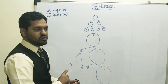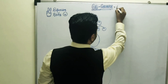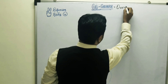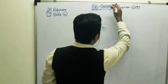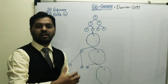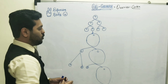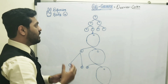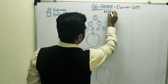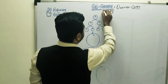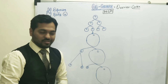Just as spermatogenesis was occurring in male gonads, oogenesis is going to occur in the female gonad, that is the ovaries. Oogenesis occurs within the ovarian cortex, and the whole process takes place inside the follicles, so different follicles can undergo the oogenesis process.